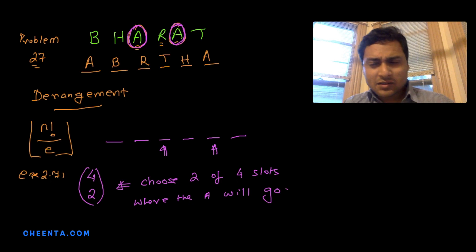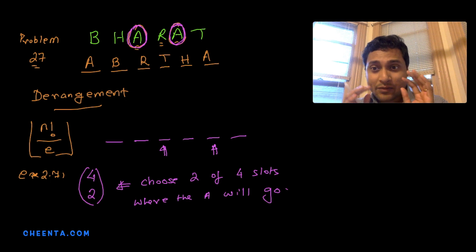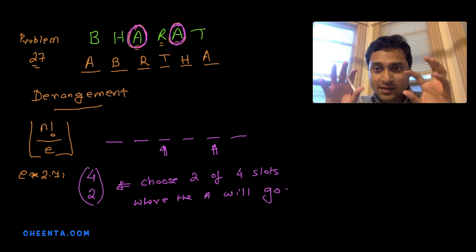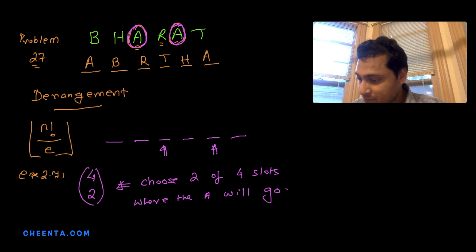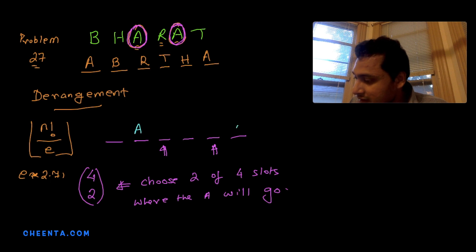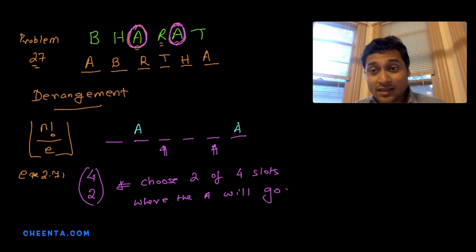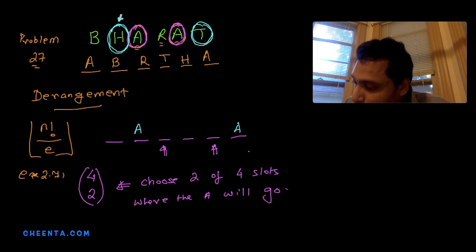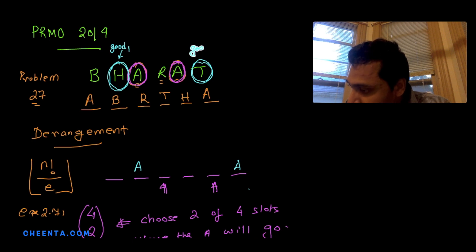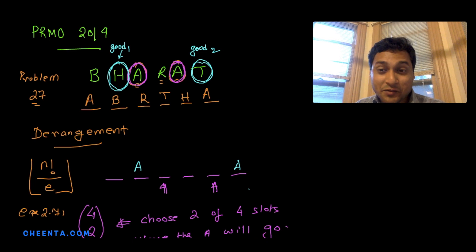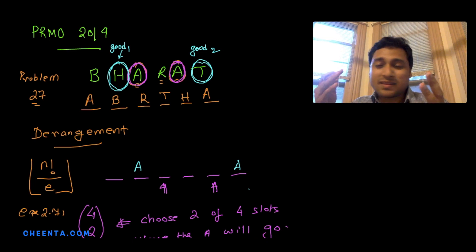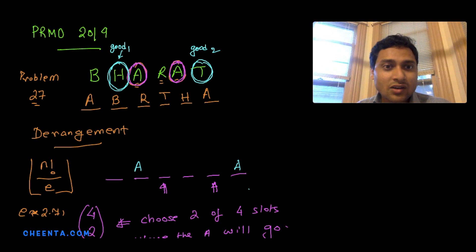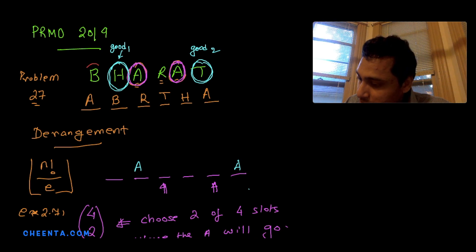Now we divide the remaining four letters into two groups. For a specific example, suppose the A's go to positions 2 and 6. The letters H and T — whose original positions are now freed — we call 'good letters' (Good 1 and Good 2). The remaining two letters, B and R, we call 'bad letters' (Bad 1 and Bad 2).